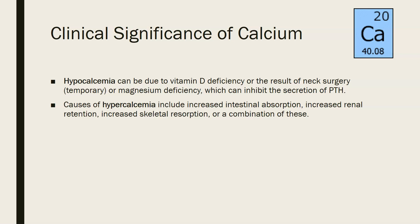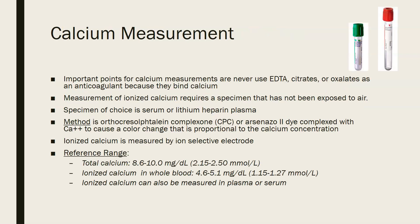The causes of hypercalcemia include increased intestinal absorption, increased renal retention, increased skeletal resorption, or a combination of these. Primary hyperparathyroidism is the most common cause of hypercalcemia.